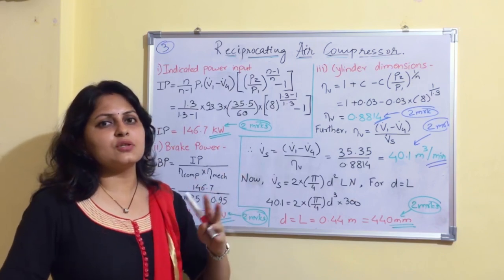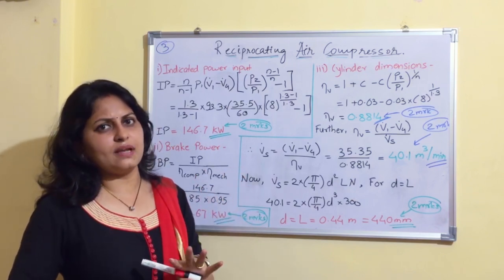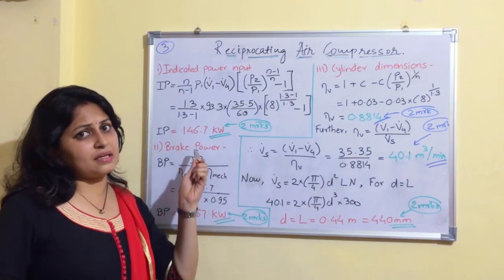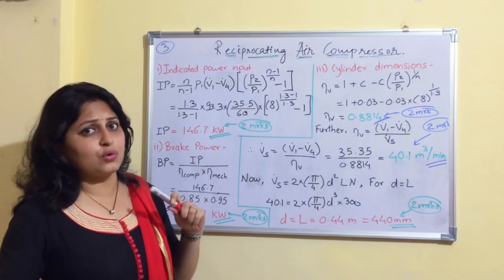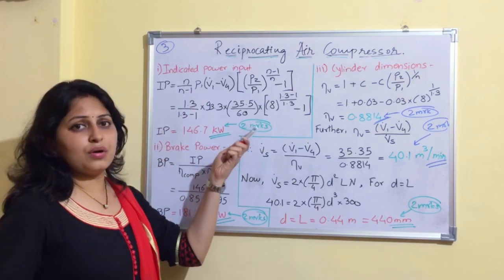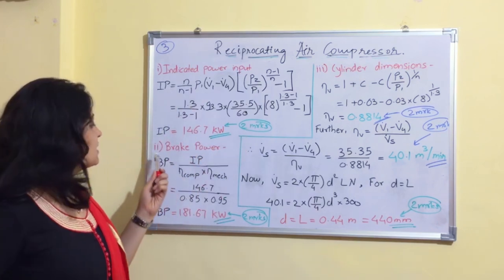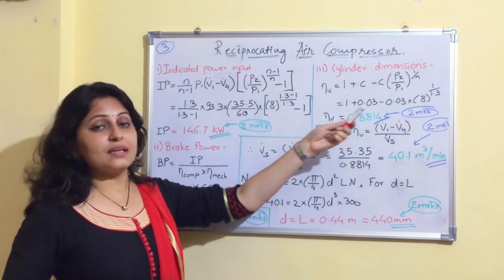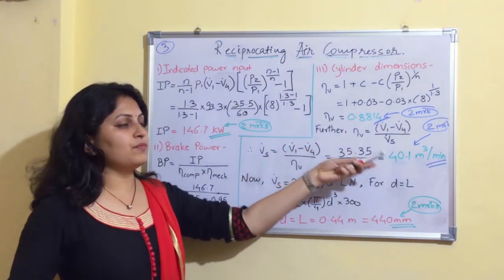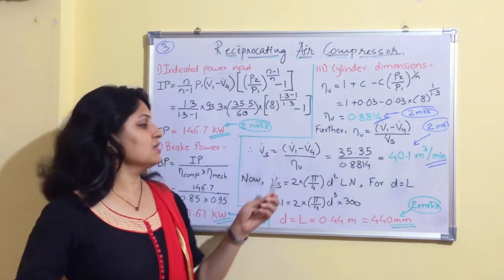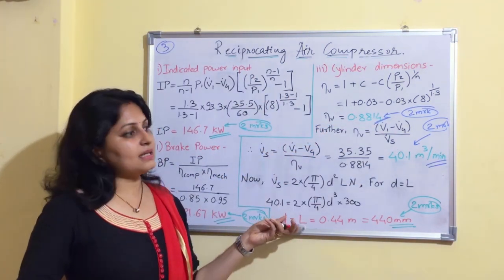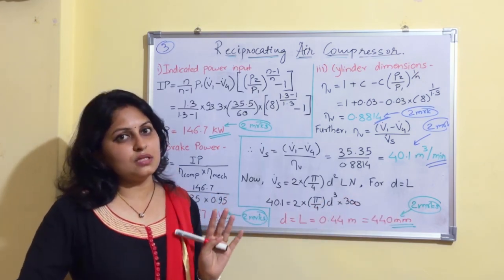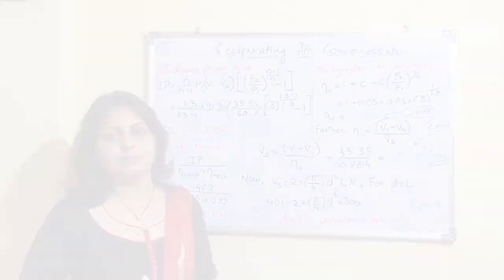In the university exam, this problem is worth approximately 10 to 12 marks. The distribution is: (V1−V4) for 2 marks, indicated power for 2 marks, brake power for 2 marks, volumetric efficiency for 2 marks, swept volume for 2 marks, and diameter and stroke length for 2 marks. This concludes Problem 3.